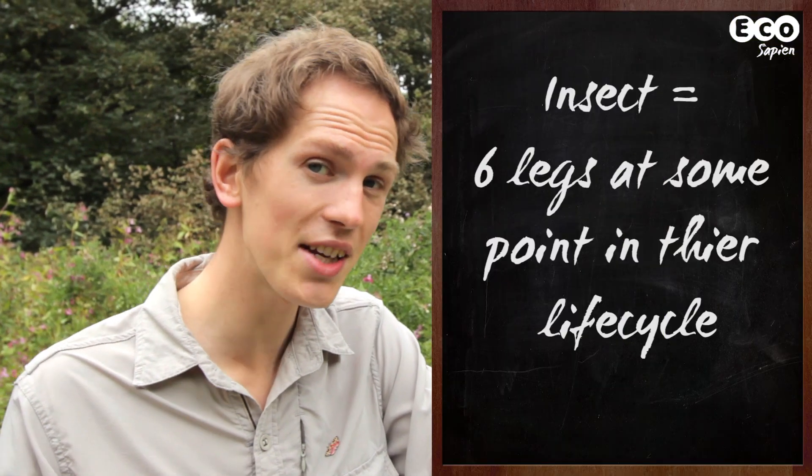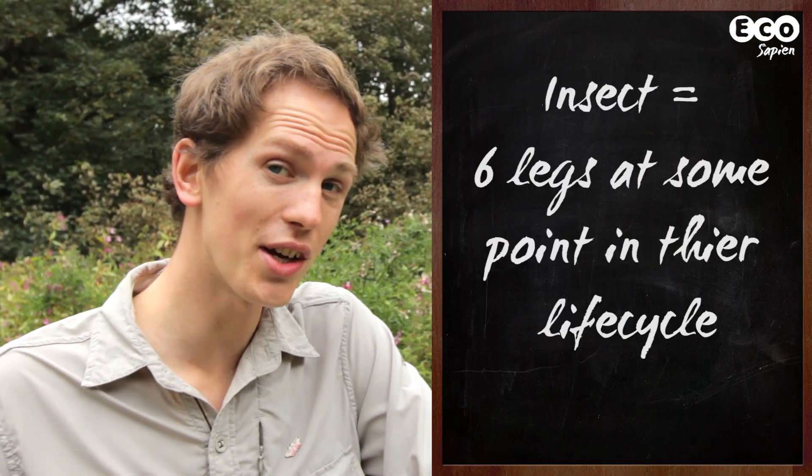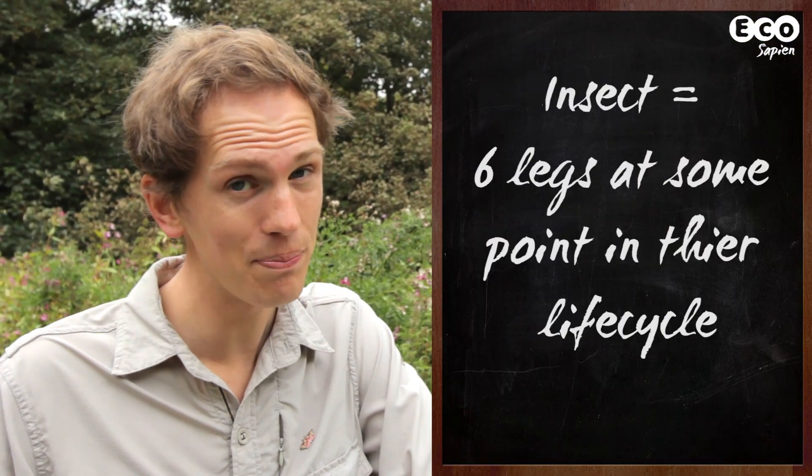And what are insects? Well, there's no simple answer — that would be too easy. But the best definition is that they have six legs at some point in their life cycle. Now if you remember one thing about insect orders, remember this: there are loads of them — 26 in the UK alone. And because you don't want to grow old watching this video, here are some of the most easily spotted ones to get you started.